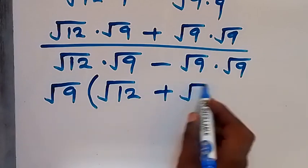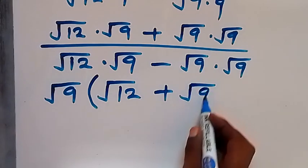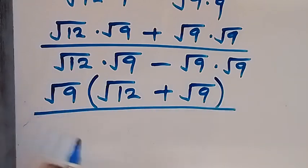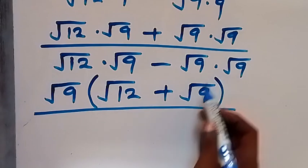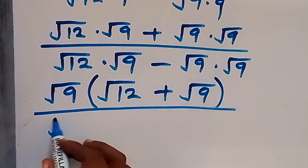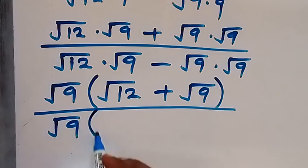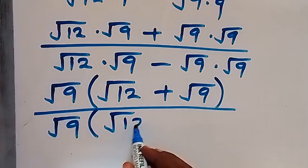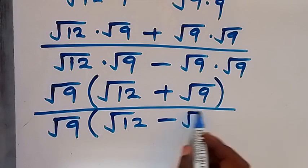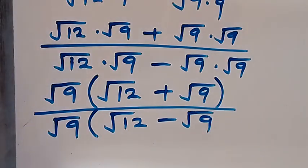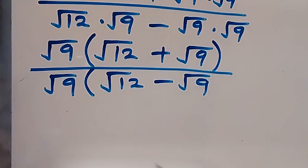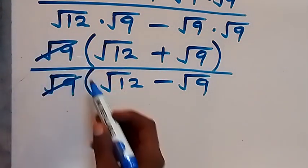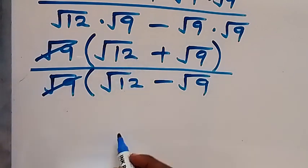Close bracket, then divided by — we also have root 9 common in the denominator, so we bring it out. What is left is root 12 then minus root 9. In this way we see that root 9 cancels out, and we are left with root 12 plus root 9 over root 12 minus root 9.